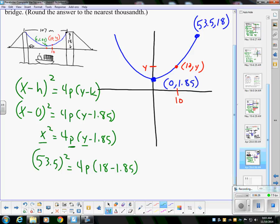In fact I'll do that, I'll work through the algebra here. I'm not pulling my calculator up, but 18 - 1.85 is 16.15, and 53.5² is 2862.25 = 4p(16.15).